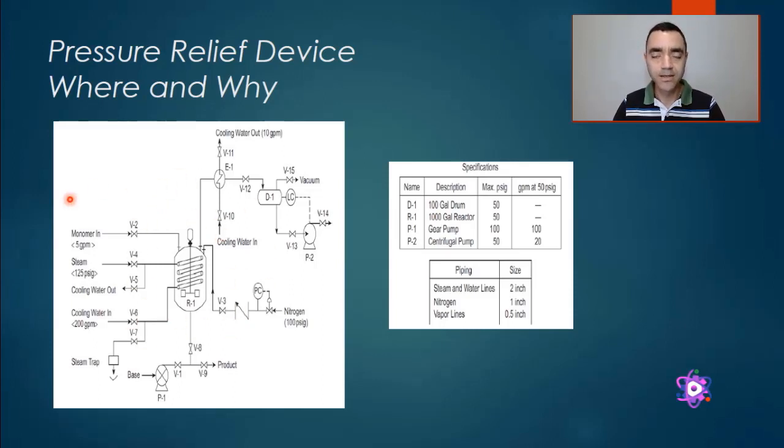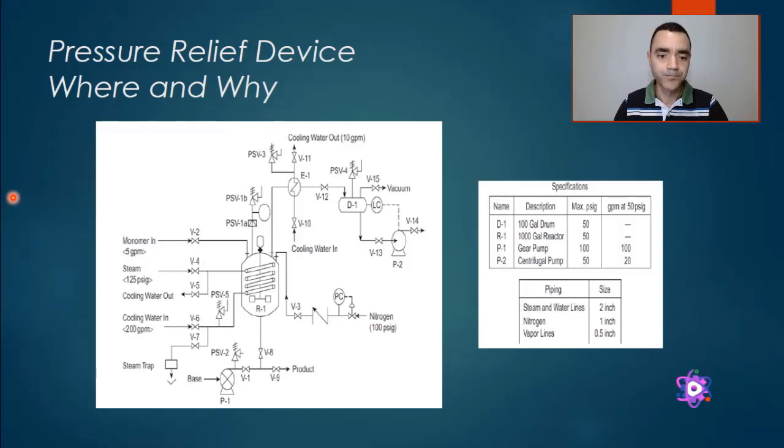So with that, we can go to the diagram and verify what the authors recommend in this case. That is basically what we have been talking about. So we have a pressure relief device at the discharge of the positive displacement pump.